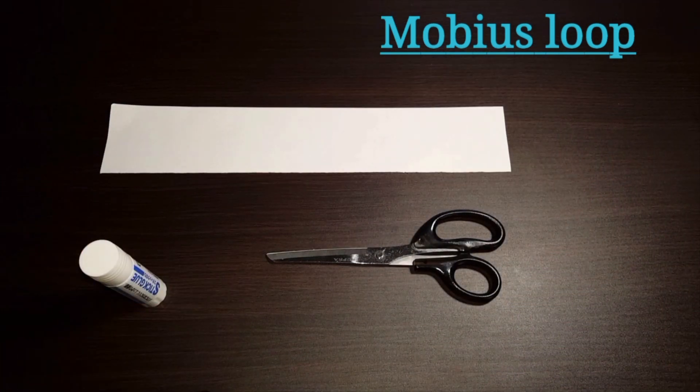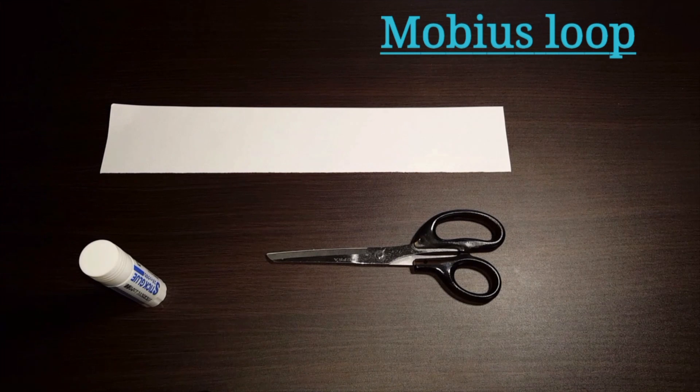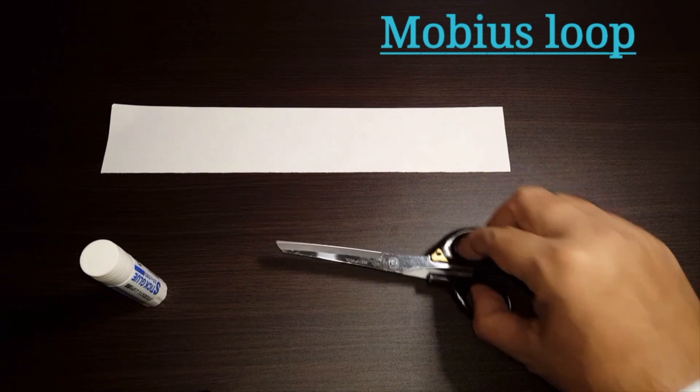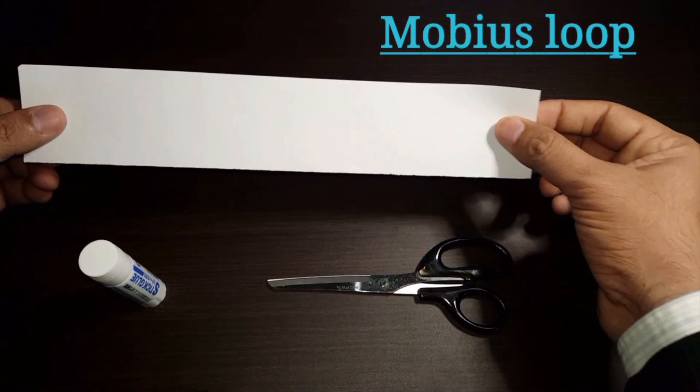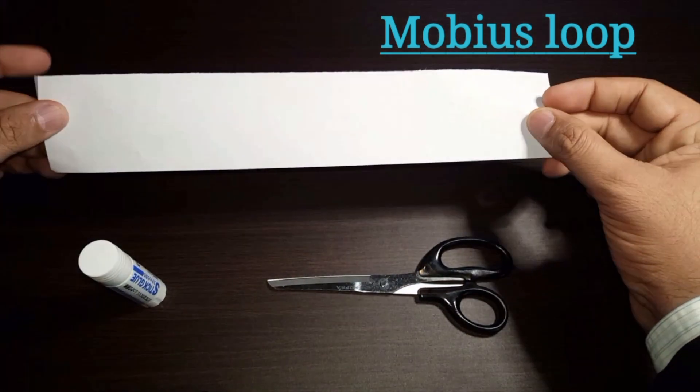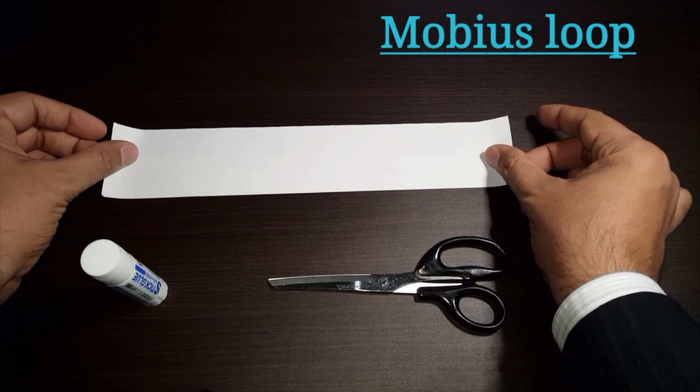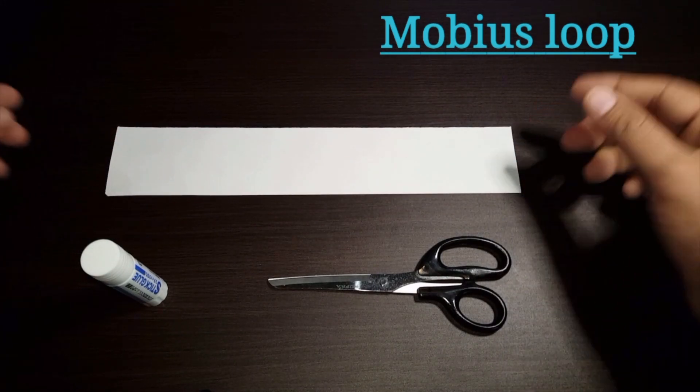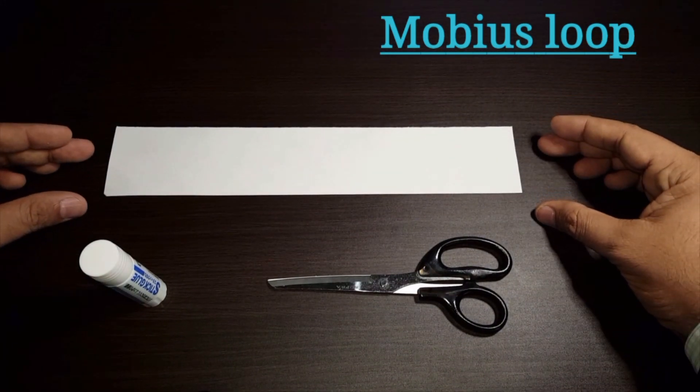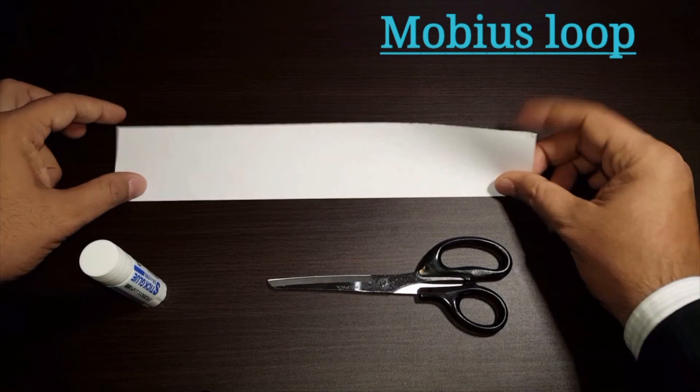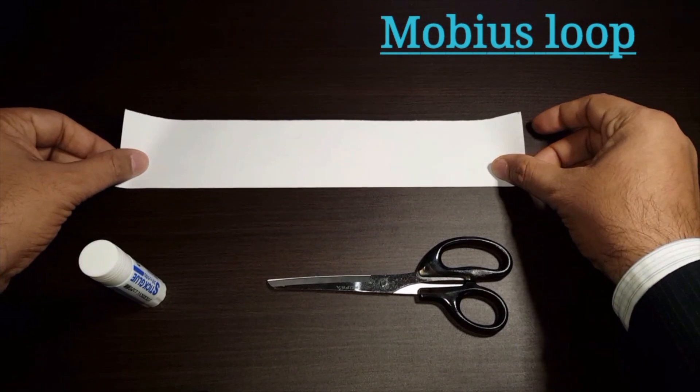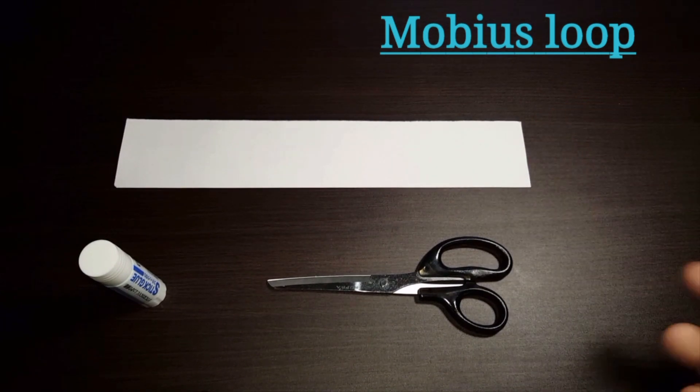The second thing that we need is a pair of scissors. Now and the third thing, the most important thing is a strip of paper. It's what I have done is I've taken an A4 size paper and lengthwise I have folded twice so you can make four paper strips out of an A4 size of paper but it can be anything really.